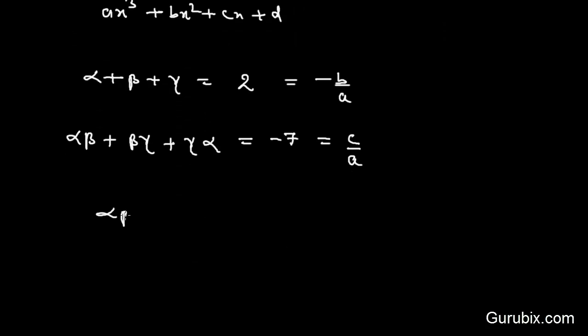And alpha into beta into gamma is given as minus 14, and that is equal to minus d over a.